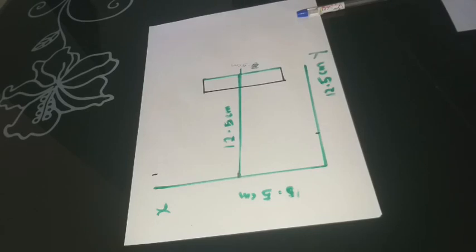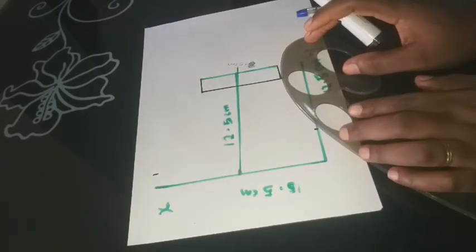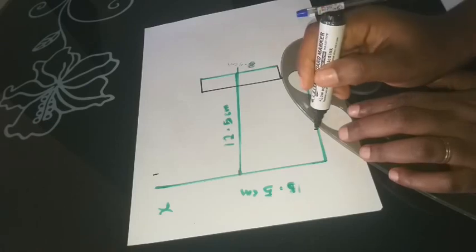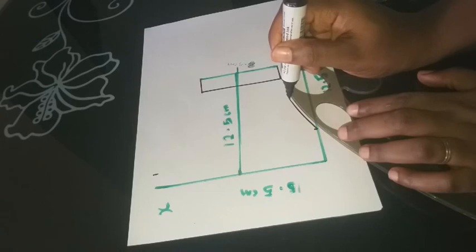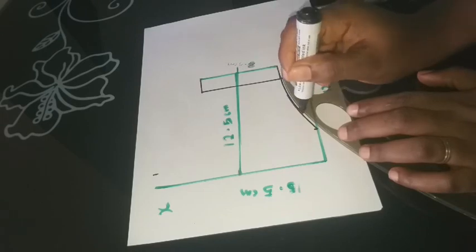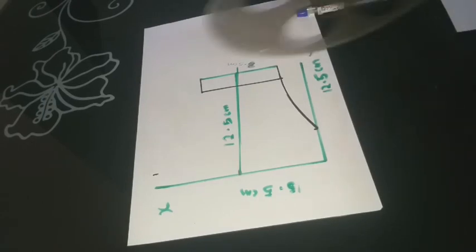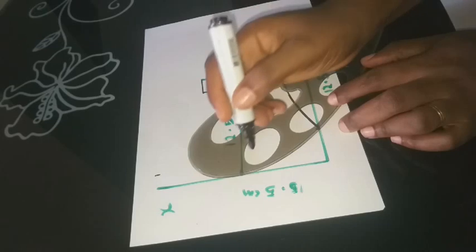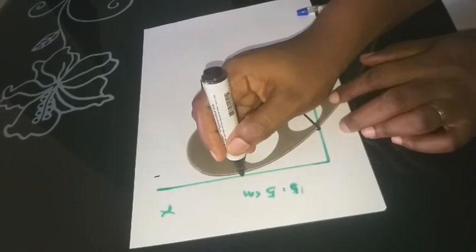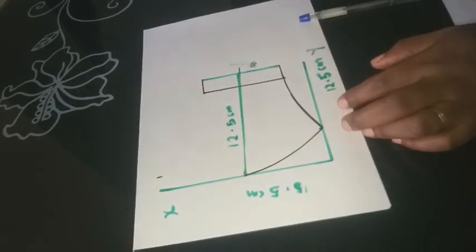Then we're going to use our French curve to add our curves by joining those points together. So I joined that point that I made to the end of that my 2 cm line. As you can see, we have a curve now, and I'm also going to use my French curve again to join that 3.5 cm point to the midpoint on my X axis.